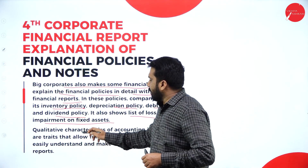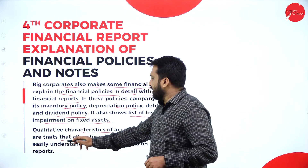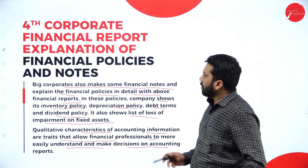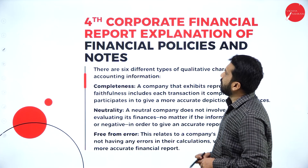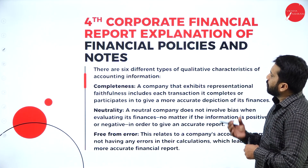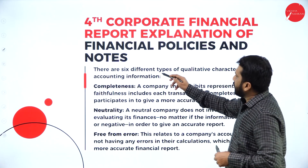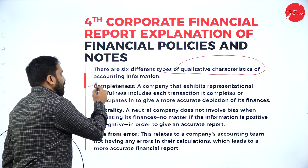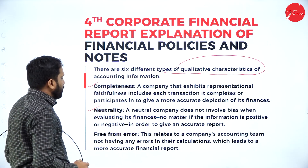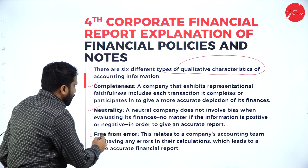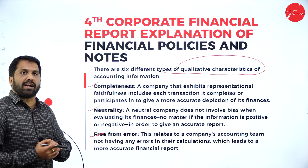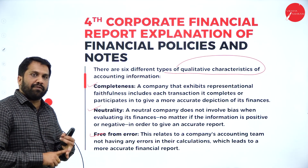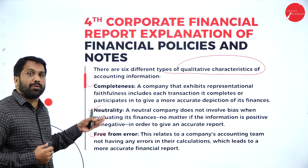Qualitative characteristics of accounting information are traits that allow financial professionals to more easily understand and make decisions on accounting reports. There are six different types of qualitative characteristics. The first is completeness. The second is neutrality — there should not be any bias or confusion. The third is free from errors — if there are errors in calculation, it will not give a true and fair result, and error always gives wrong information.